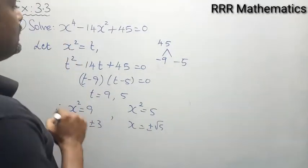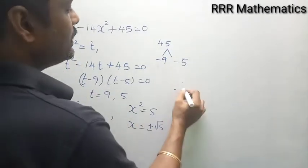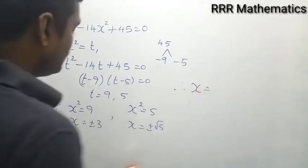So in this case it is degree 4, it has 4 values. Therefore the value of x will be ±3 and ±√5. Very simple.